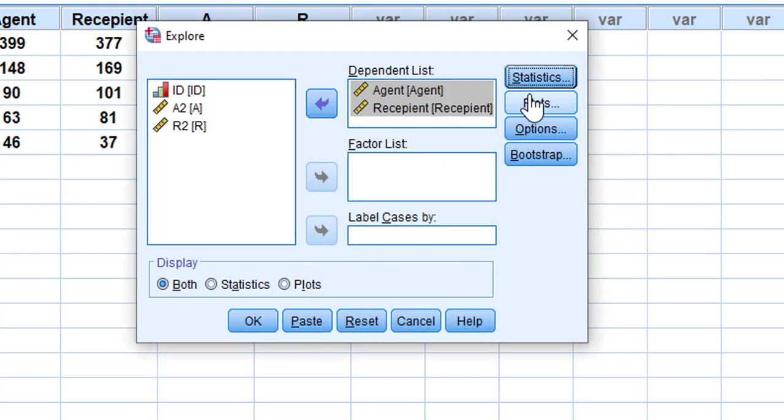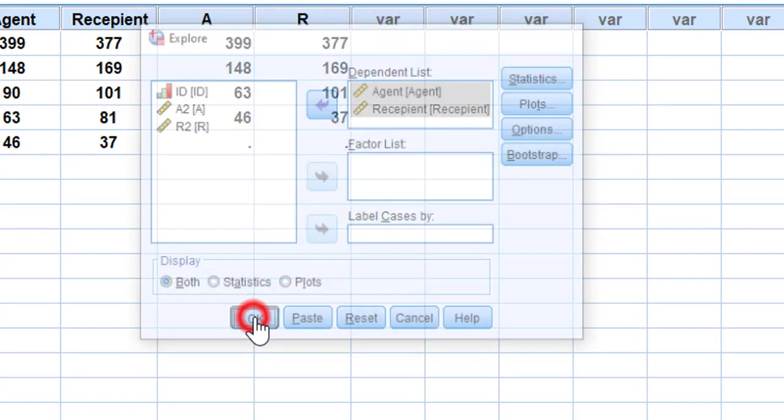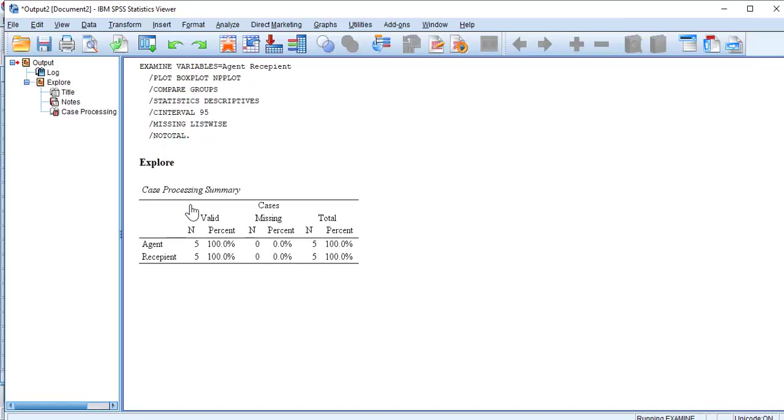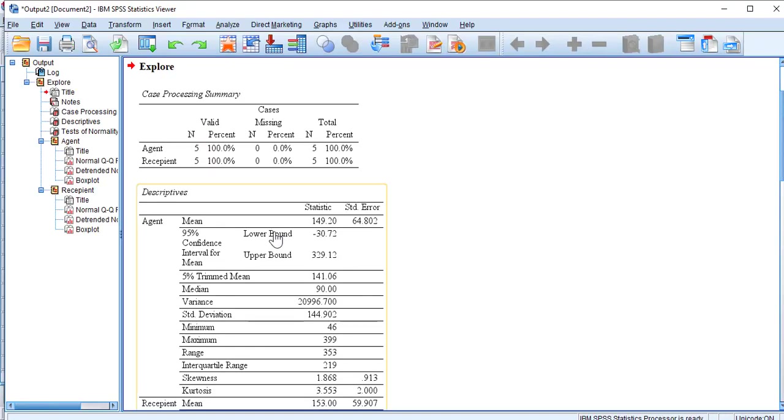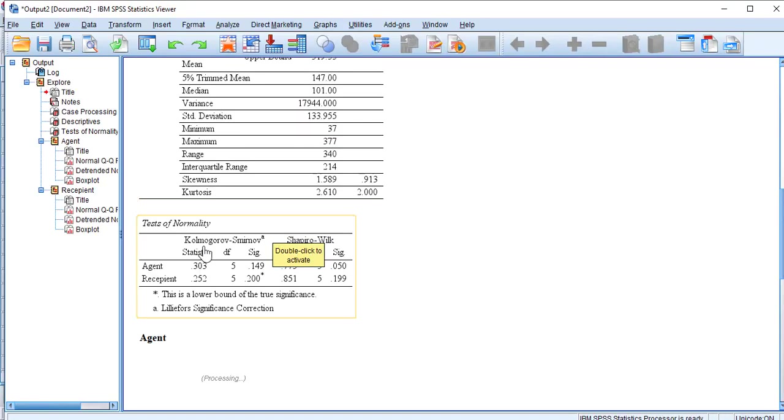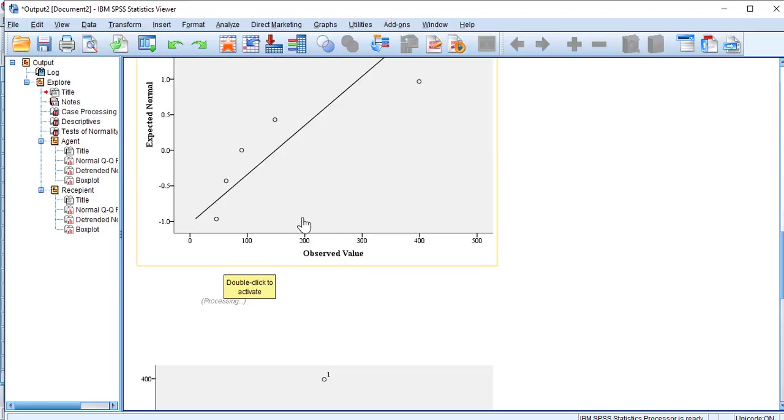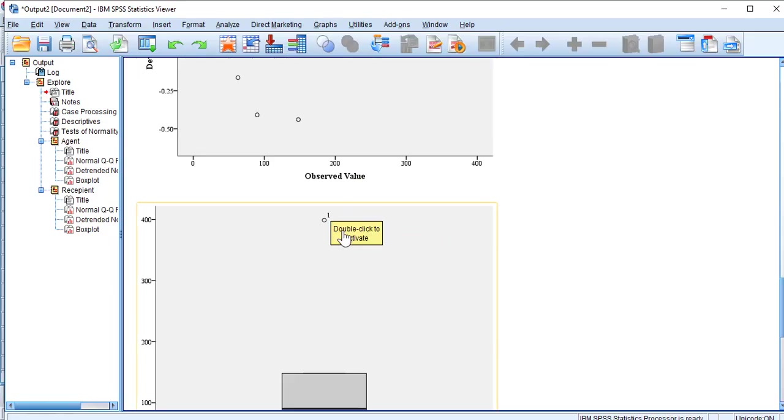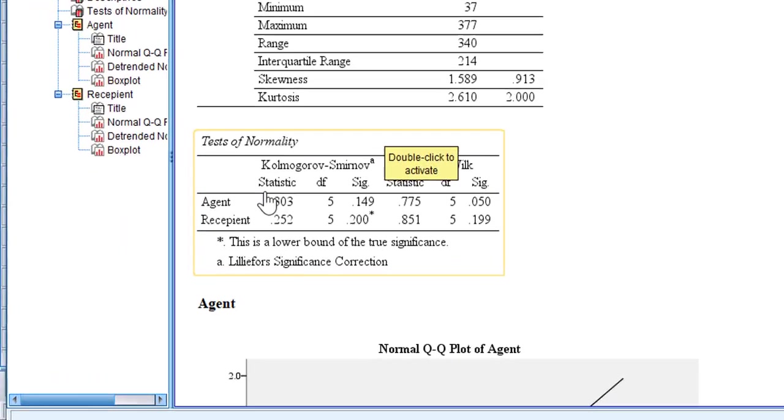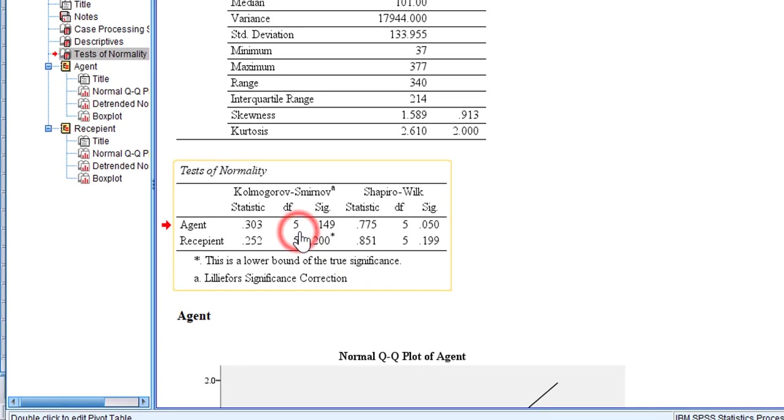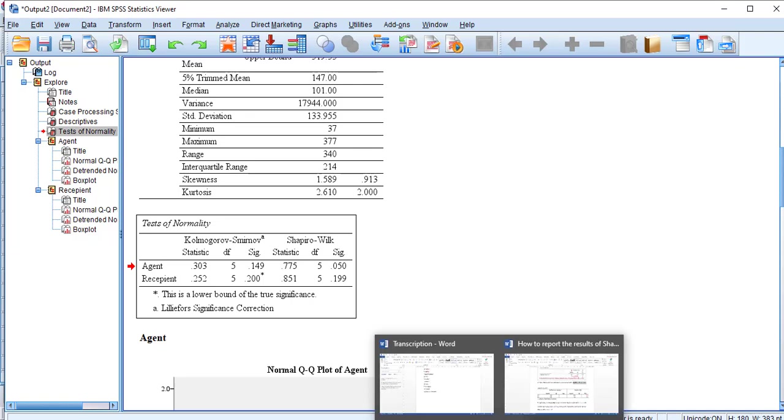I'm going to click OK. And in the output, this is the result of the Shapiro-Wilk test and the Kolmogorov-Smirnov, as well as the Q-Q plot of distribution just to visually see how the distribution is. Anyway, so what interests us is this table. I'm going to copy and paste it to my research paper.